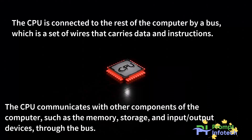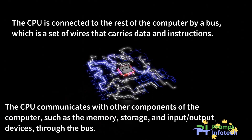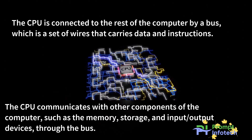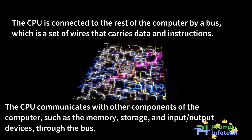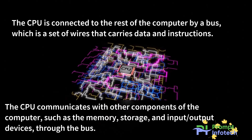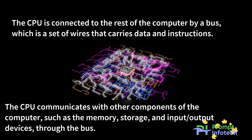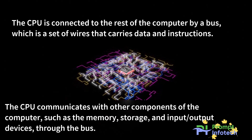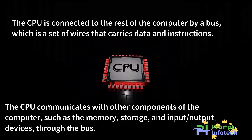The CPU is connected to the rest of the computer by a bus, which is a set of wires that carries data and instructions. The CPU communicates with other components of the computer, such as the memory, storage, and input-output devices, through the bus.